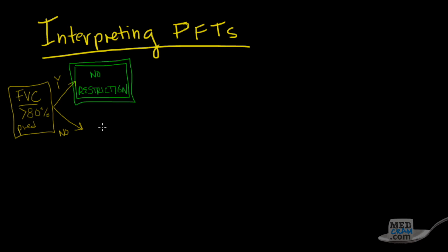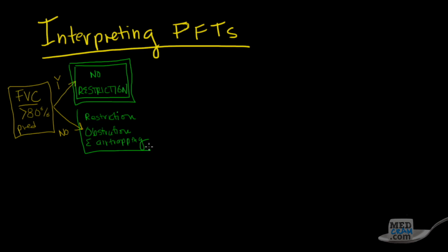If the FVC is less than 80% of predicted, then we can say that we either have restriction or obstruction with air trapping — it's one or the other. The next thing you do in either one of these cases is move on to the next question.